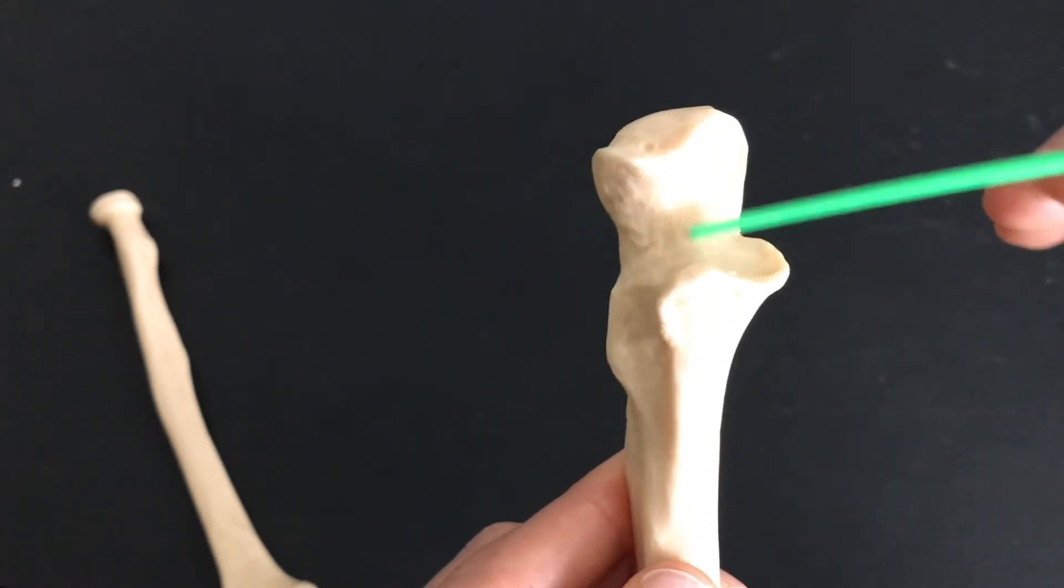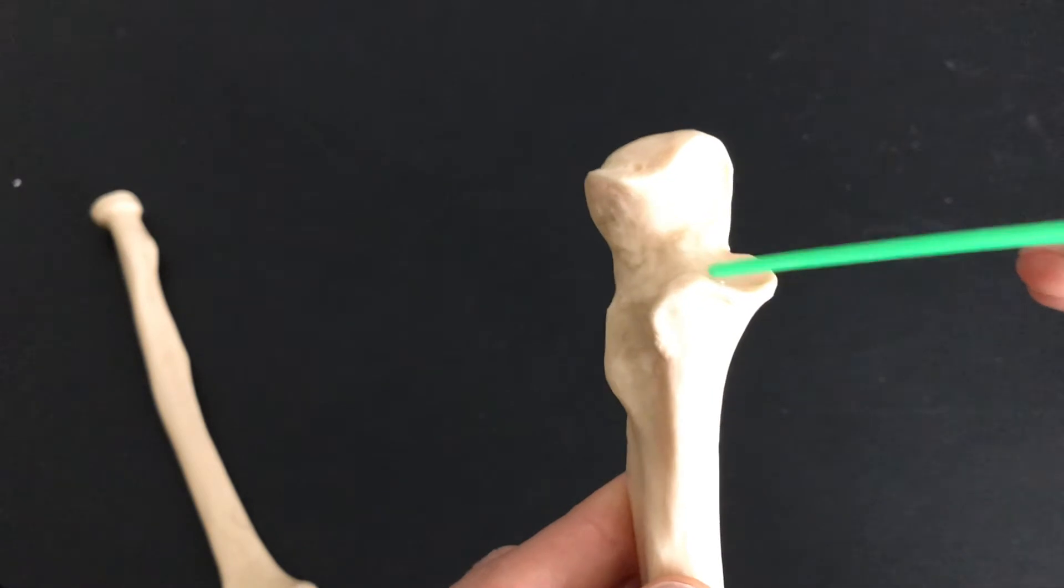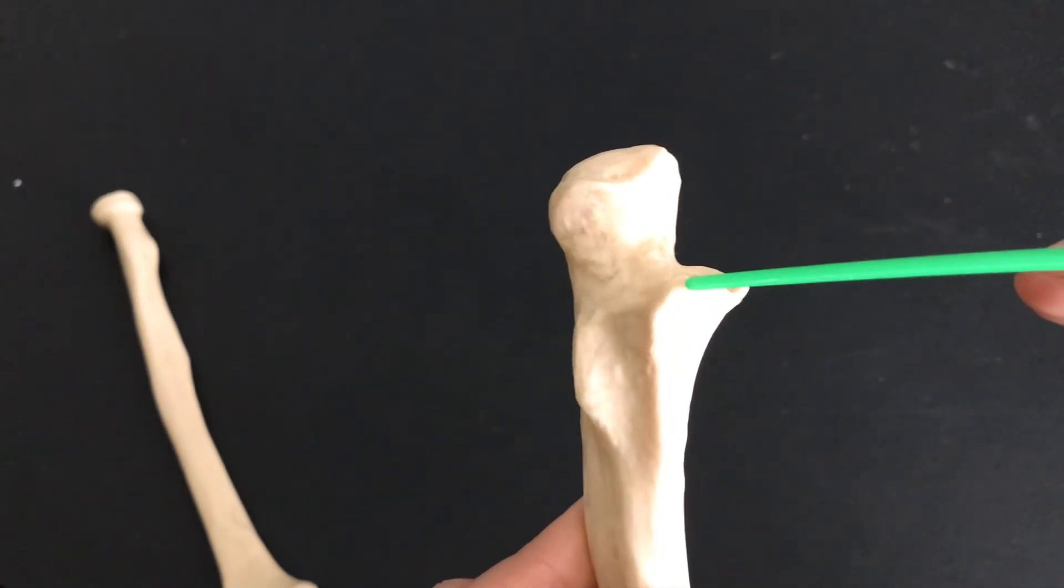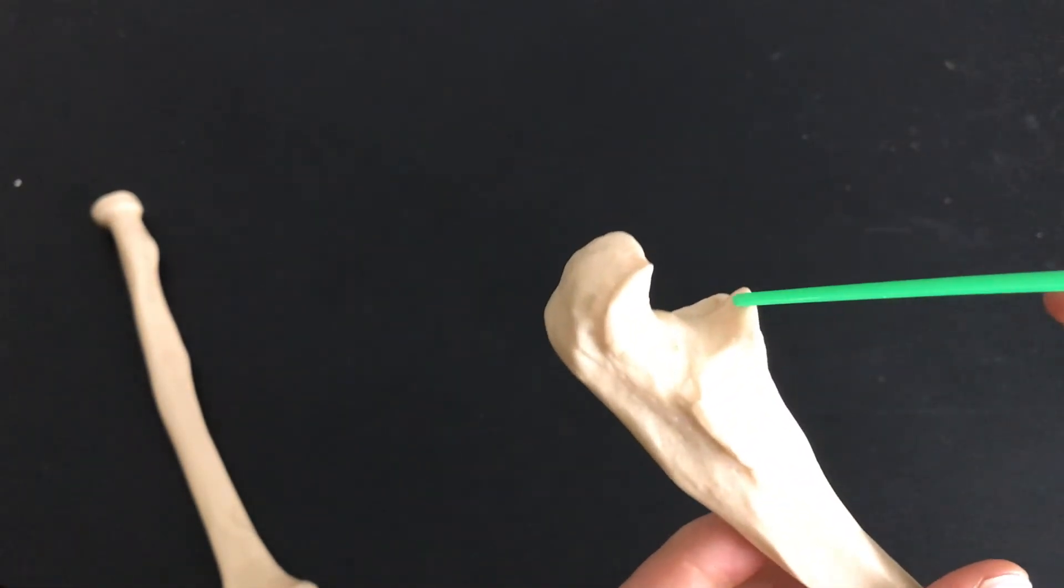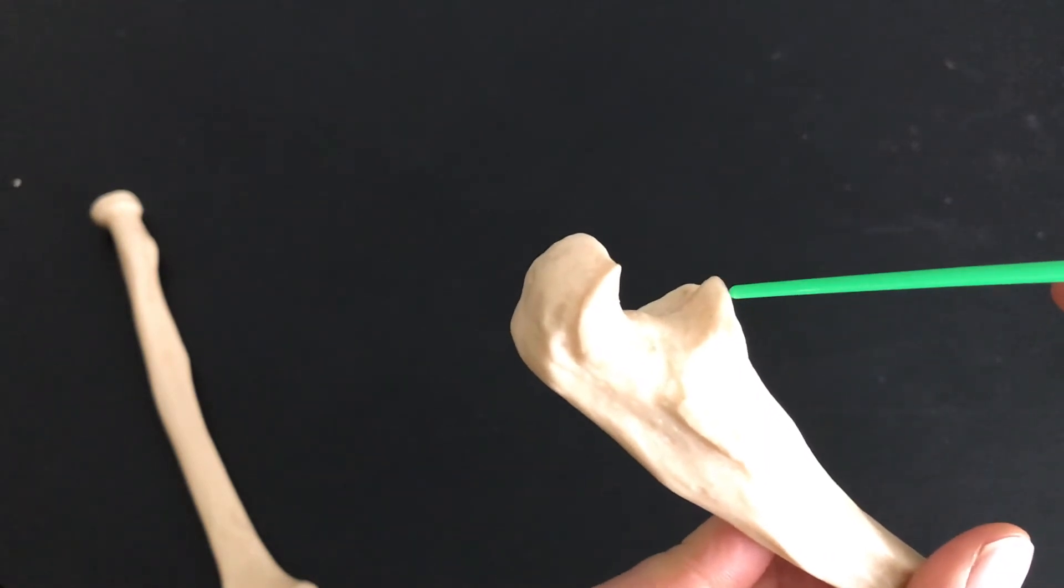We have something called the trochlear notch. We have the coronoid process—that's this little tip right here.